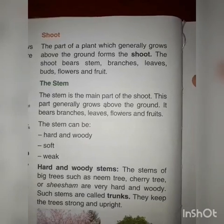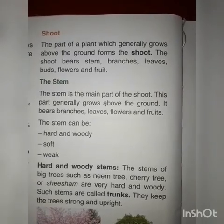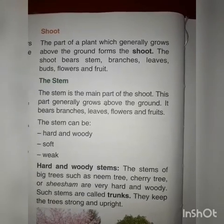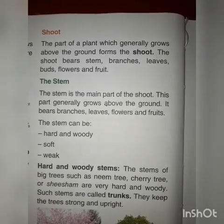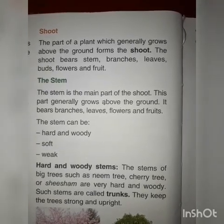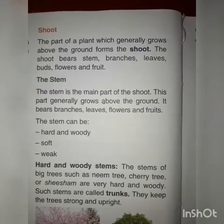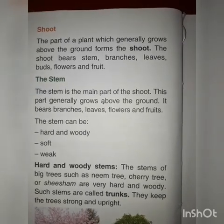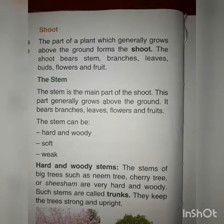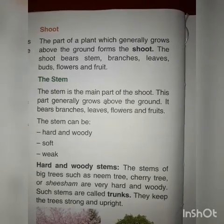Stem तीन types के हो सकते हैं: hard and woody, soft, and weak। First, hard and woody stem। The stems of big trees such as neem tree, cherry tree, or schism are very hard and woody. Such stems are called trunks. They keep the trees strong and upright. ऐसे stems को trunk बोलते हैं। यह trees को strong यानी मजबूत और सीधा रखते हैं।